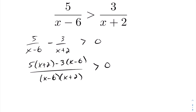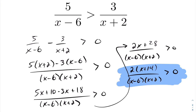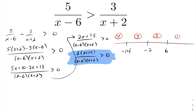Going ahead and expanding and simplifying, I end up with two times x plus 14 in the numerator, while we leave x minus six and x plus two alone in the denominator.